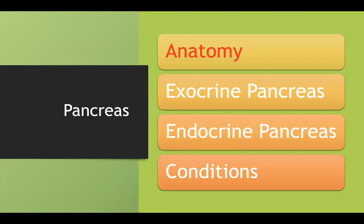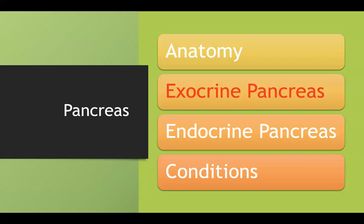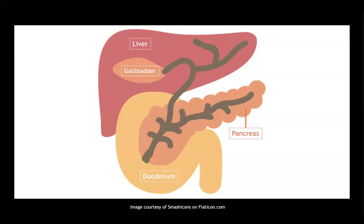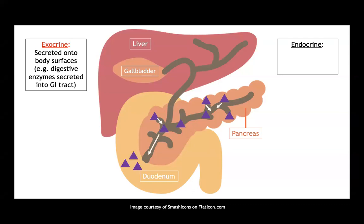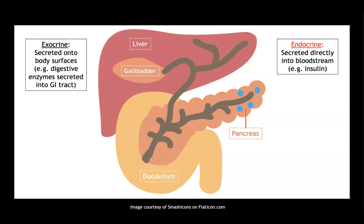For this lecture, I'll break it down into the exocrine and endocrine pancreas. The exocrine pancreas is where pancreatic enzymes are secreted into the duct and travel into the duodenum to start working. The endocrine pancreas is where hormones are secreted directly into the bloodstream — for example, islets of Langerhans secreting insulin straight into the bloodstream without going through the GI tract.